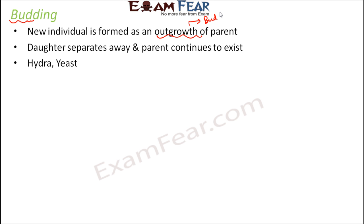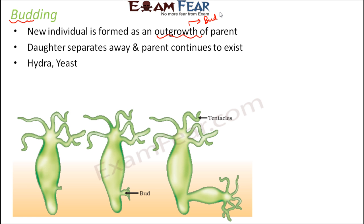Budding occurs in organisms like hydra and yeast. This is the structure of hydra — you can see a small outgrowth here, and this small outgrowth is called a bud. This outgrowth gradually develops and grows into a new individual, then breaks off. So the parent continues to exist and the daughter is also formed.